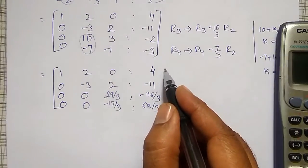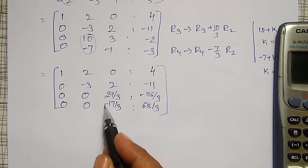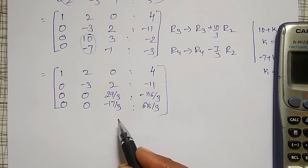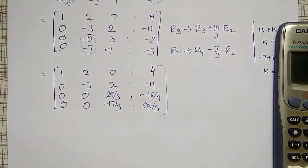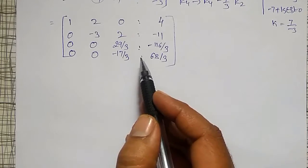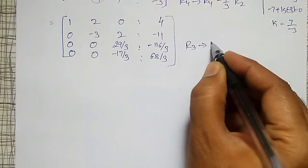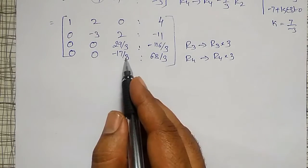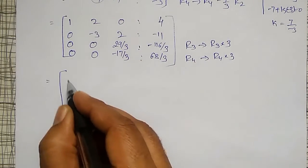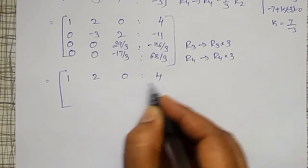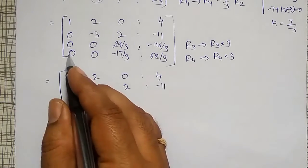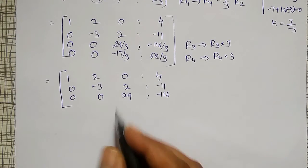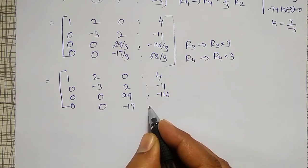To avoid these fractions, R3 is replaced by R3 times 3, and R4 is replaced by R4 times 3. The matrix now becomes: row 1: 1, 2, 0, 4; row 2: 0, minus 3, 2, minus 11; row 3: 0, 0, 29, minus 116; row 4: 0, 0, minus 17, 68.